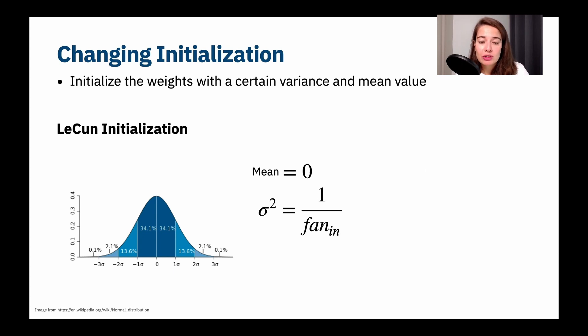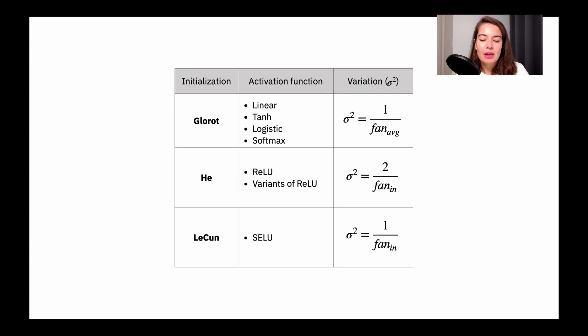The last one is the LeCun initialization. Mean needs to be zero and variance needs to be one divided by a number of inputs. This one is best used with SELU, which is kind of a variant of ReLU, but we're going to learn about in a sec. Here is a little useful table, but I will put this also in the course summary. So you don't have to write it down or take a screenshot. You can have access to all this information in the summary notes.